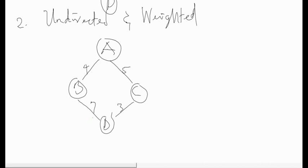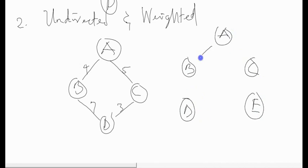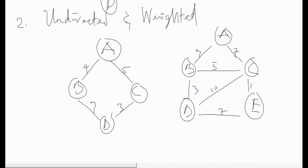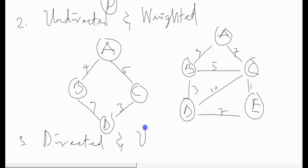For another example of undirected and weighted graph, we have nodes A, B, C, D, and E with edge weights 3, 7, 5, 10, 7, 1, and 3. You can see it is also an undirected and weighted graph. The next category is directed and unweighted graph.